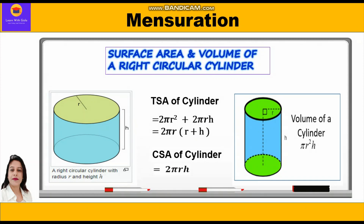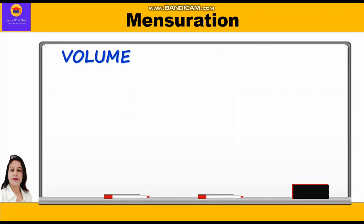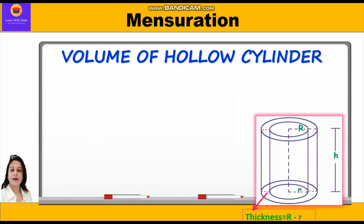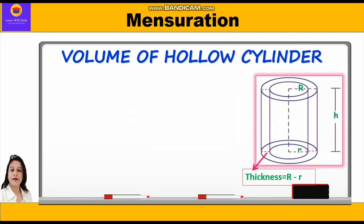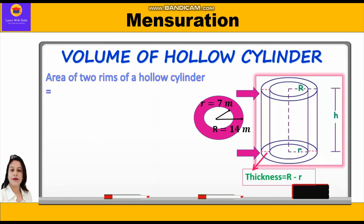Now we move to the volume of a hollow cylinder. A hollow cylinder comprises an outer radius and an inner radius. The difference between the outer radius and the inner radius is the thickness. The area of the two rims of a hollow cylinder — one at the top and one at the bottom — is equal to the outer area minus the inner area.